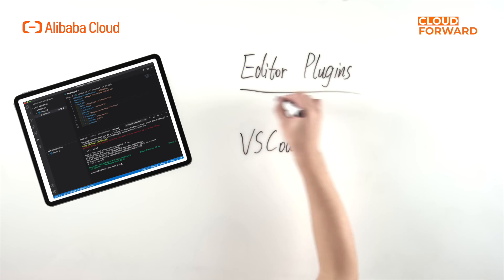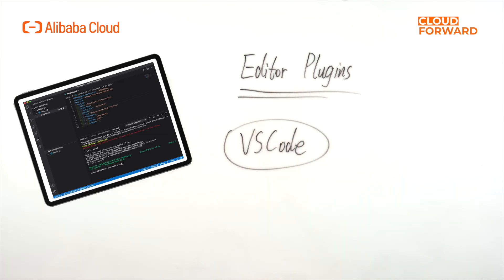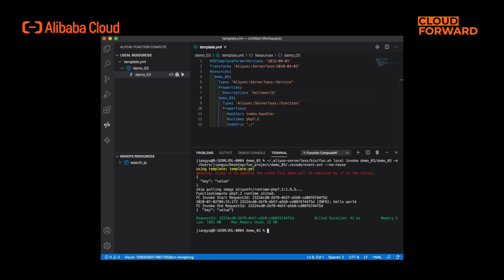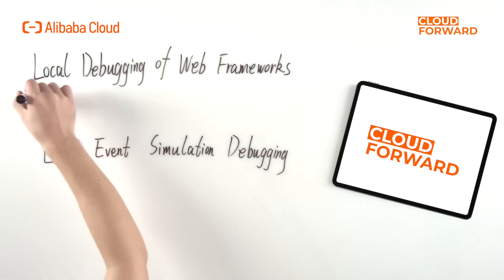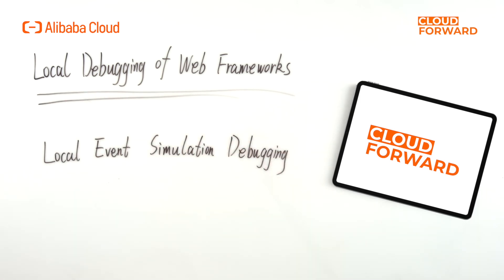Let's take a look at debugging through editor plugins. Taking the VS Code plugin for Alibaba Cloud Function Compute as an example, after downloading the plugin and configuring the account information, you can create a new function locally and set breakpoints for debugging. Other debugging methods include local debugging of web frameworks and local event simulation debugging.